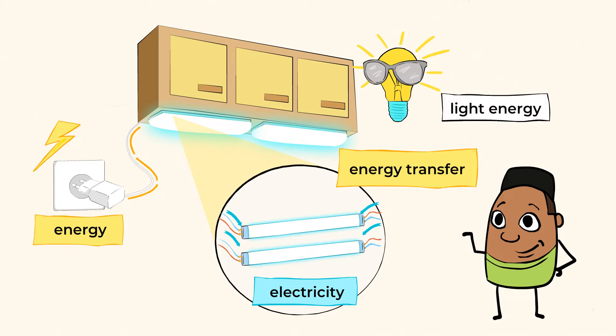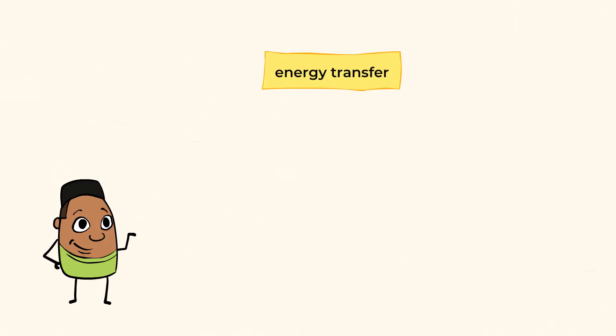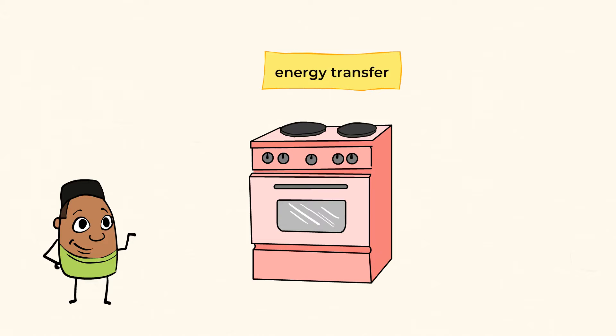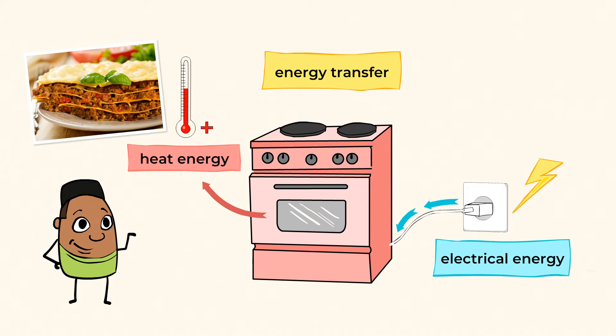And light energy is pretty cool because it's a form of energy that we can see with our eyes. But there are some forms of energies we can't see with our eyes. Another example of an energy transfer is the oven. This oven takes electrical energy and transforms it into heat energy so that you can bake delicious lasagna.